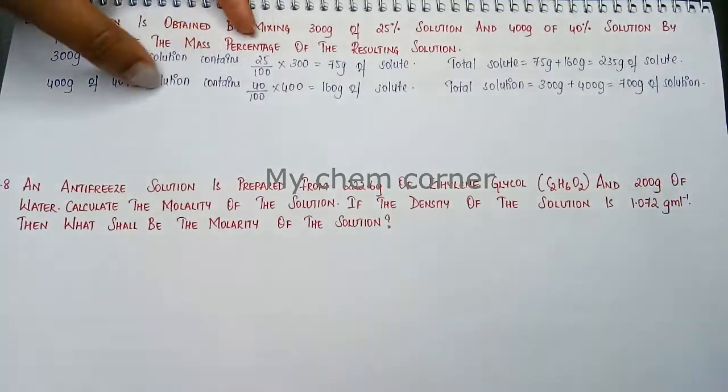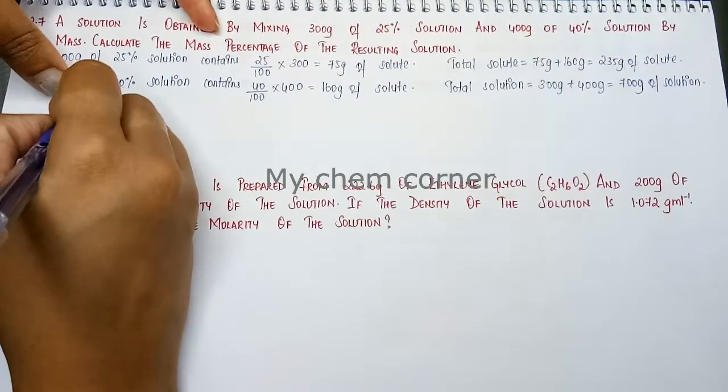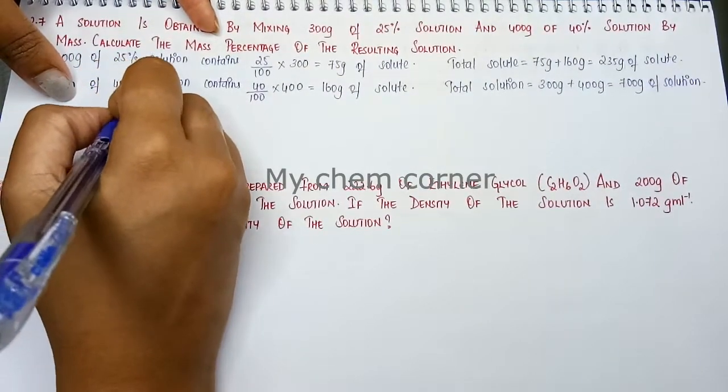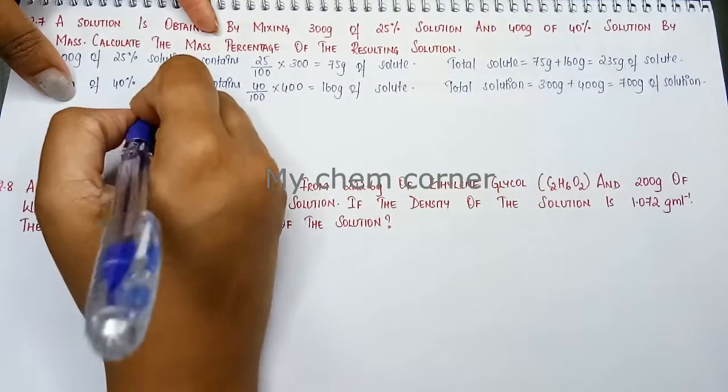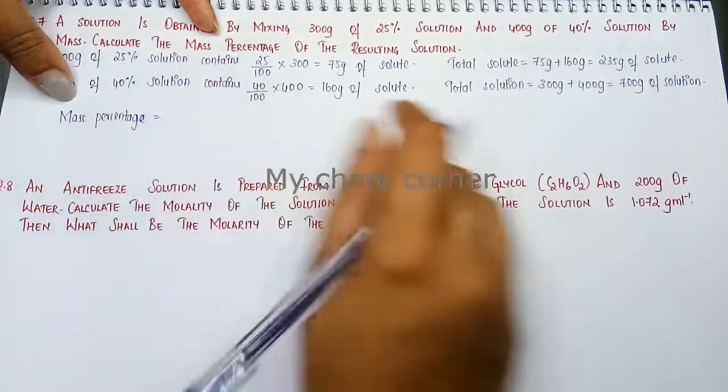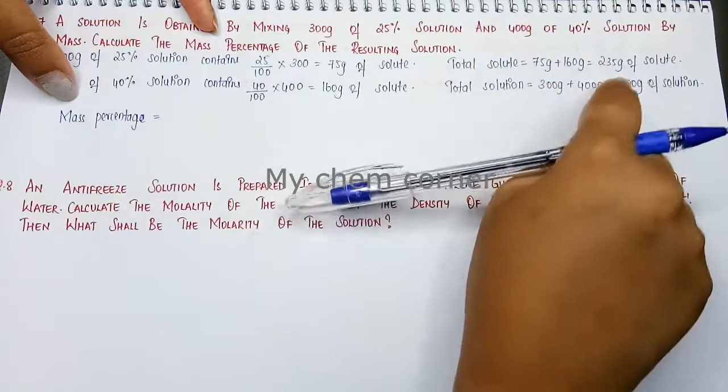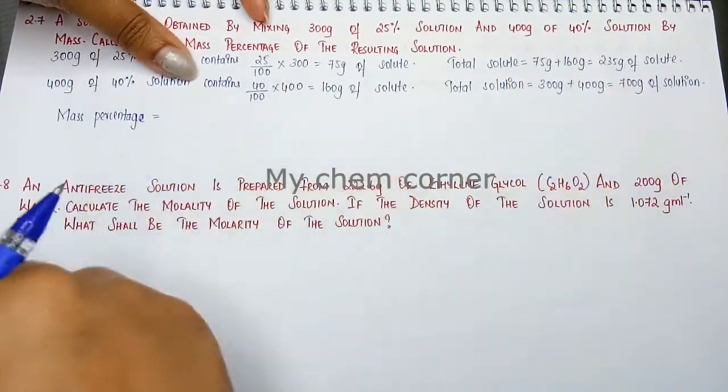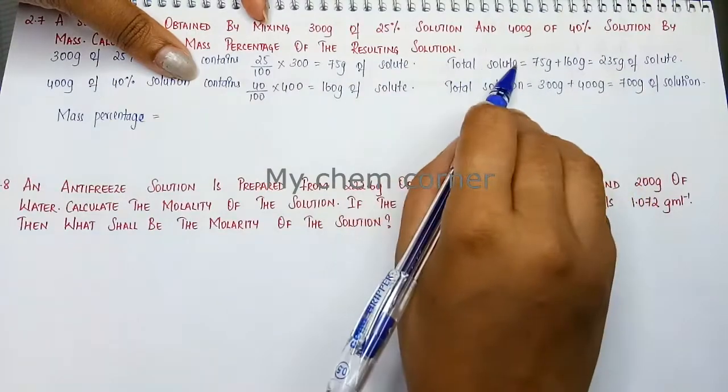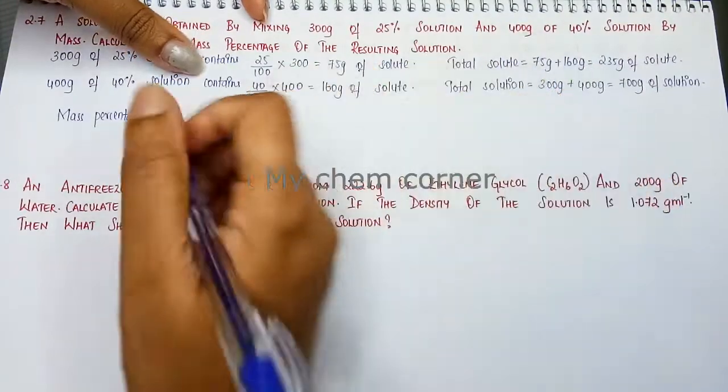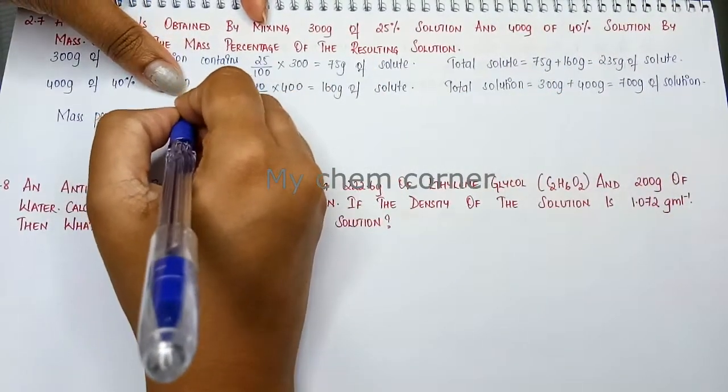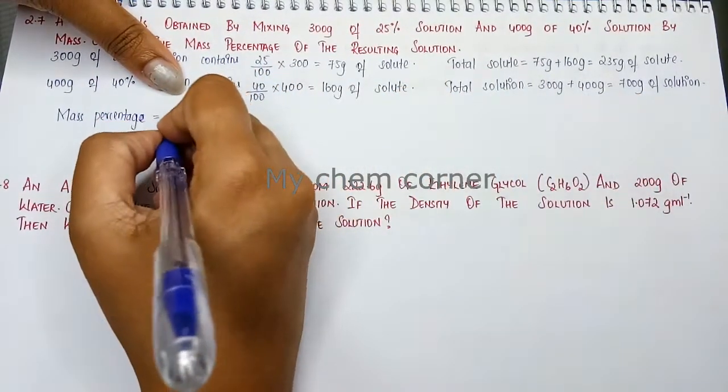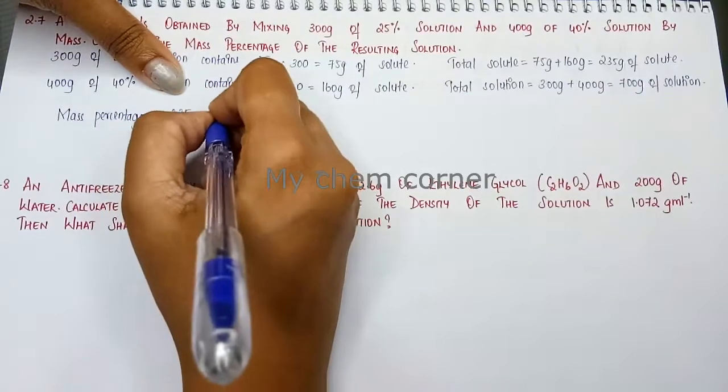So I have solute and I have the total weight of solution. Let's find out the mass percentage. Mass percentage, what is the formula? Nothing but weight of the solute by weight of solution into 100. So what is the total weight of the solute? It is 235 divided by total weight of solution is 700. Because you're finding out percentage, it is into 100.